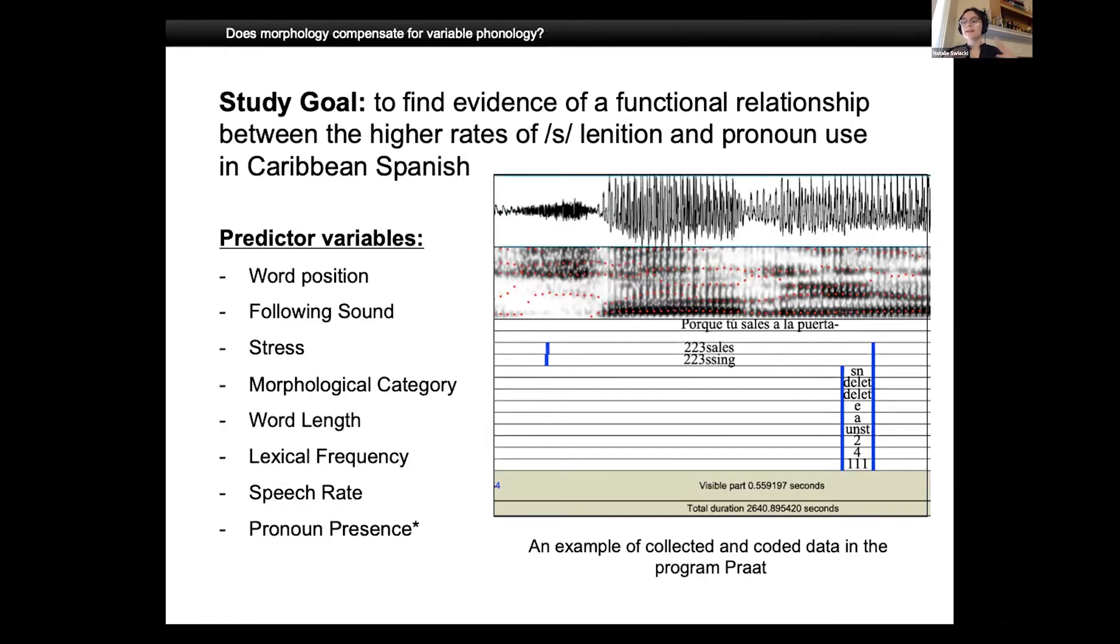The aim of my study was to find a significant relationship between the increased rates of pronoun use and S deletion in Caribbean dialects based on this distinction I just described between second person singular and first person plural verb forms in Spanish. To do this, I analyzed the speech of seven male Spanish speakers of Caribbean origin. I first gathered general syllable final S data from the speakers to see if their S expressions were typical for their dialect group. This involved going through transcribed interviews and finding places where an S was or could have been used and recording information about it, such as if it was deleted or not and what its linguistic environment was, which basically just means I recorded information about those language internal features I talked about earlier.